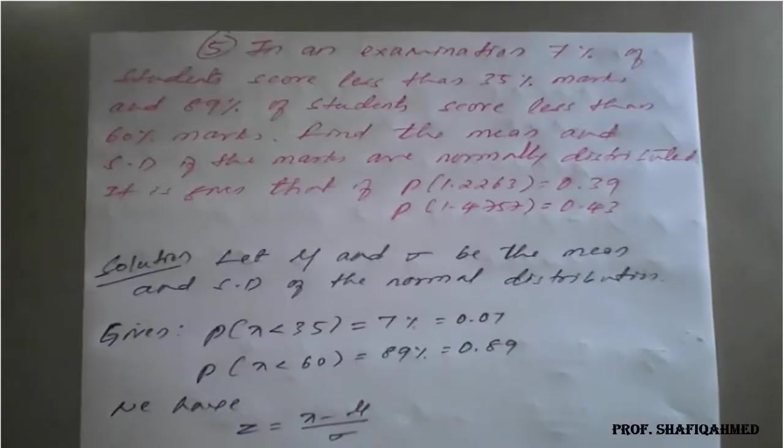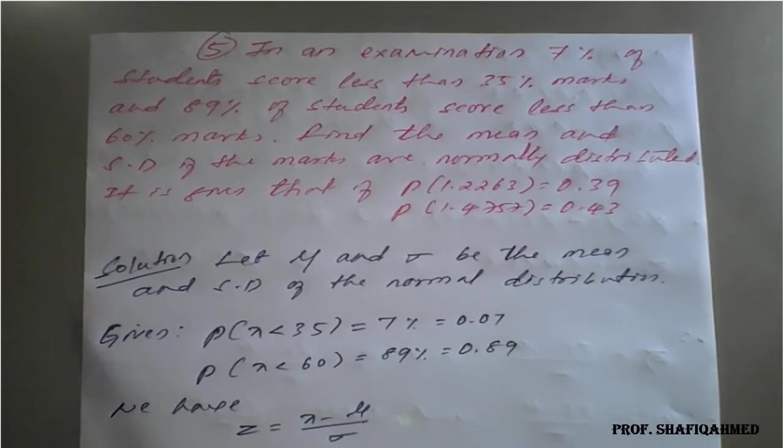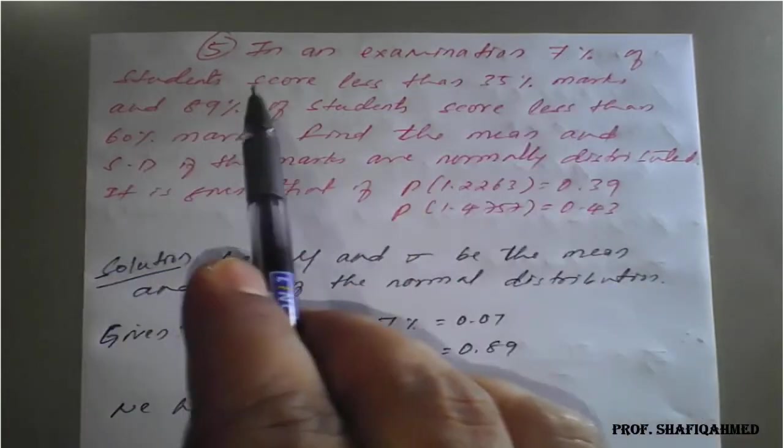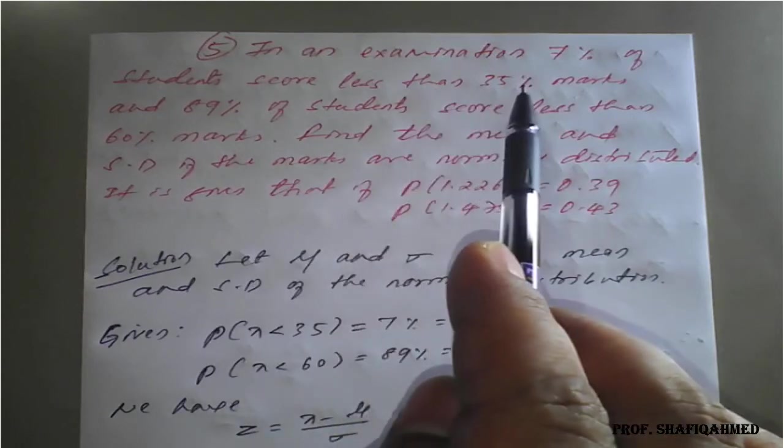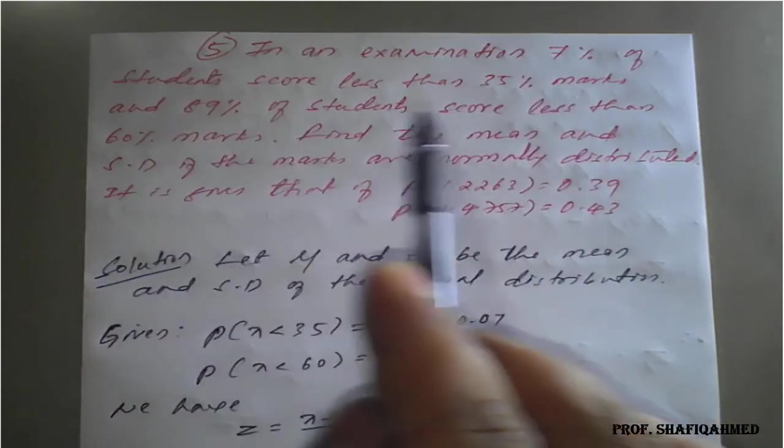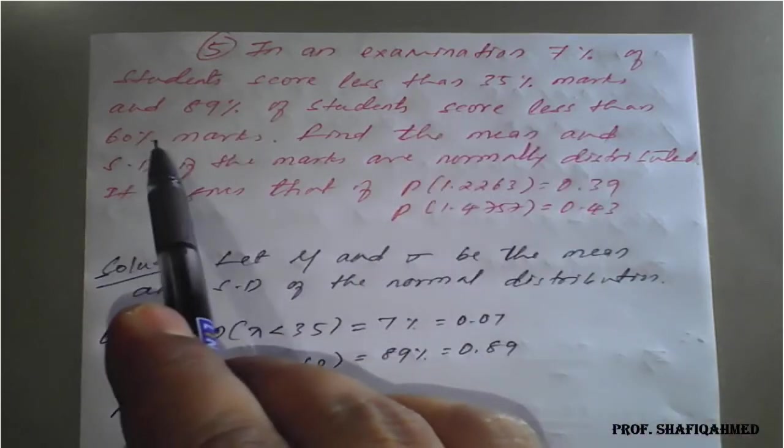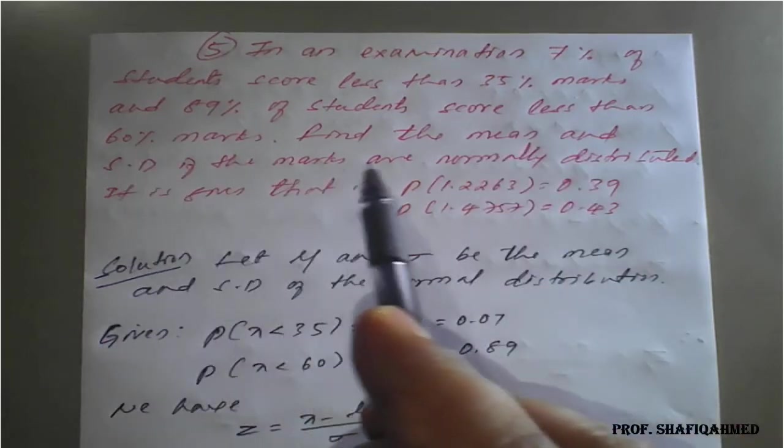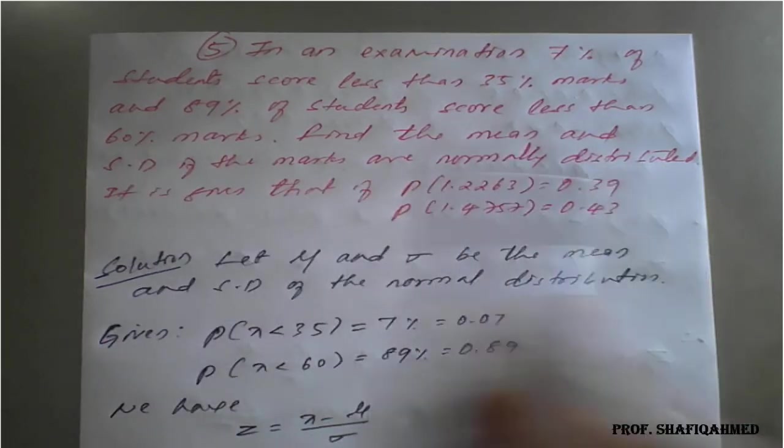Next question is, in an examination, 7% of students score less than 35% of marks and 89% of students score less than 60% marks. Find the mean and standard deviation of the marks normally distributed.